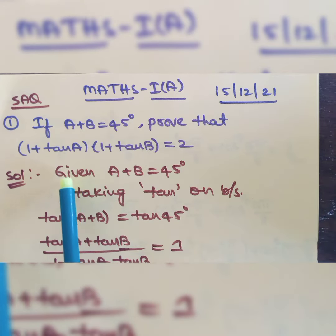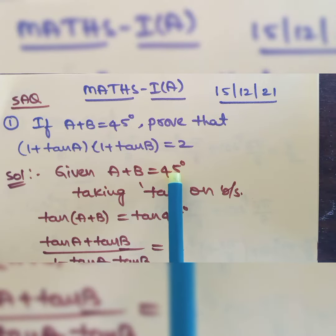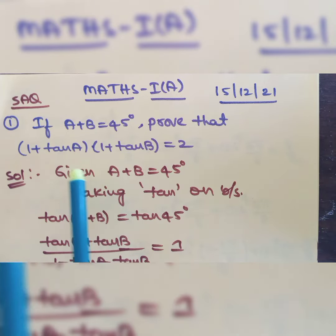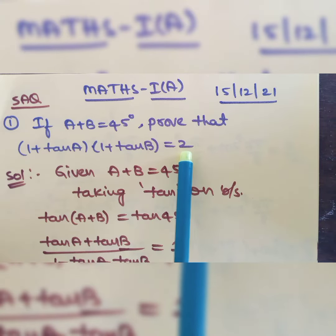Solution is given. What is given in the problem? A plus B is equal to 45 degrees. What is the required answer? (1 + tan A) into (1 + tan B) is equal to 2.